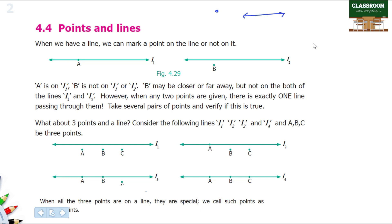Let's learn two things. First one, L1 is a line. What is the point above? A is on L1, B is on L1. In the next figure, B is not on L1. A is on L1, B is not on L1.